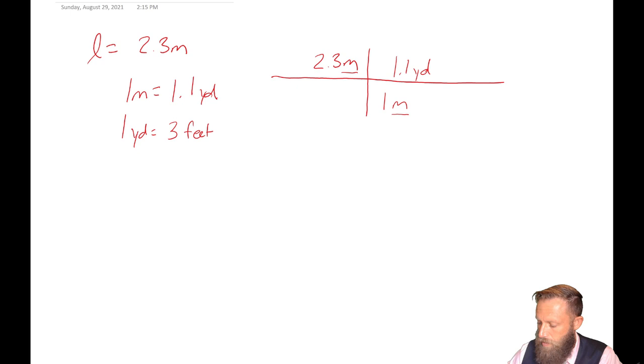And notice I put this in a specific way where you notice that this meter and that meter actually are on opposite sides of the actual fraction. That's so that they can actually cancel out, right? Because a meter divided by a meter is just nothing. And so what we will see is I've canceled out my meters. Now I have converted that to a yard. Let's keep going, though.